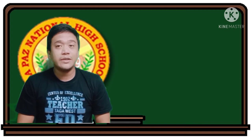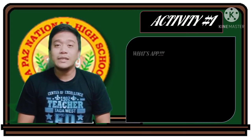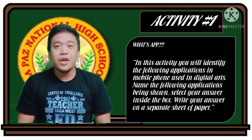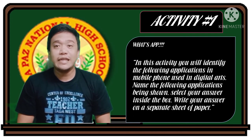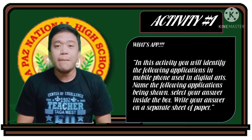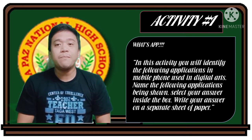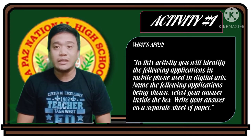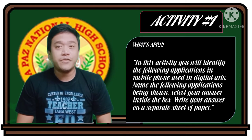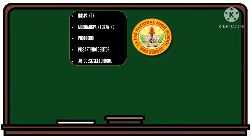Let's start our lesson proper. Activity number 1: What's Up? In this activity, you will identify the following applications in mobile phones used in digital art. Name the following applications being shown and select your answer inside the box. Write your answer on a separate sheet of paper. You have only 5 seconds to answer each picture. Inside the box are the given choices: Ibis Paint X, Medium Paint Drawing, Photo Grid, Pixart Photo Editor, and Autodesk Sketchbook.